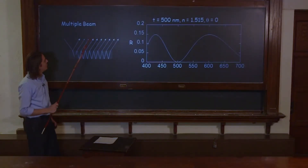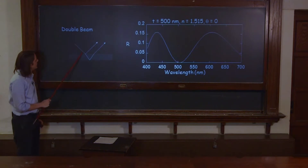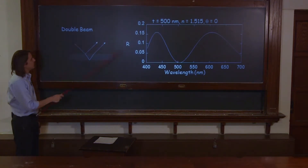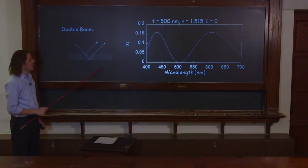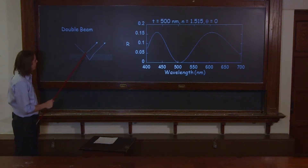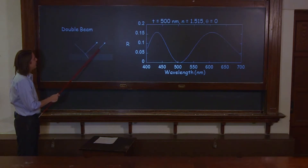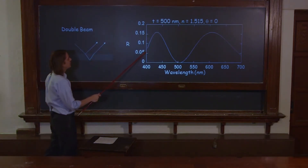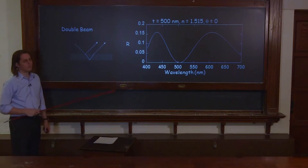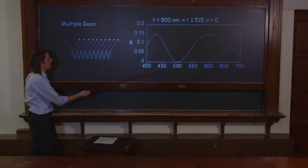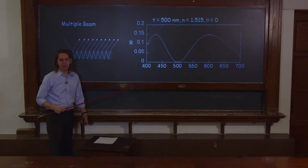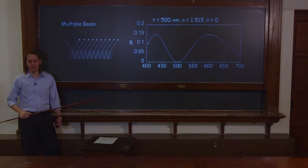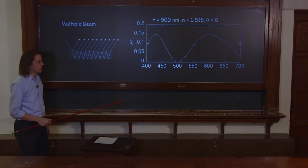The point is, for just a piece of glass with index 1.5, the double-beam approximation was pretty good. It's actually true that for a piece of glass, pretty much everything is defined by these first two reflections. Even though there's an infinite number of other reflections, they're too small to add up. So when you add them all up, it has essentially no effect — the more complicated formula gives almost the same answer as the simple formula.